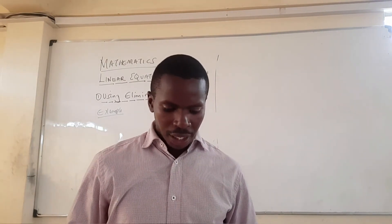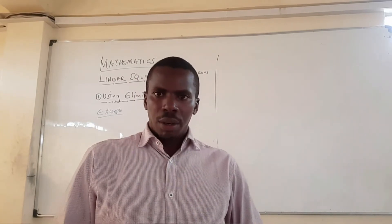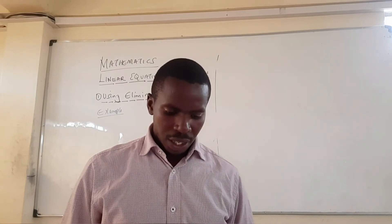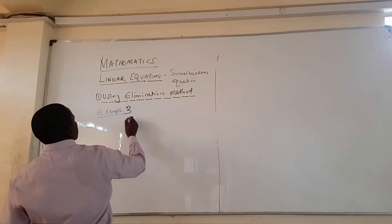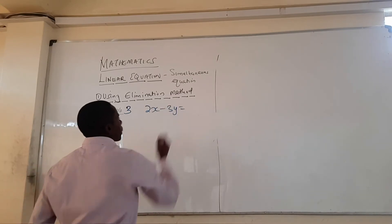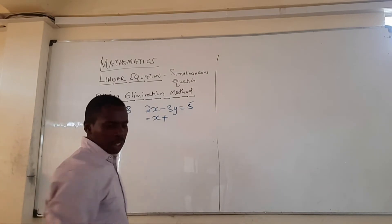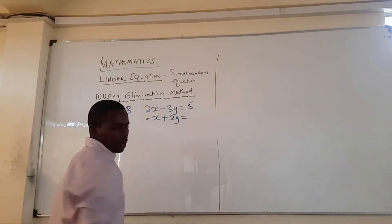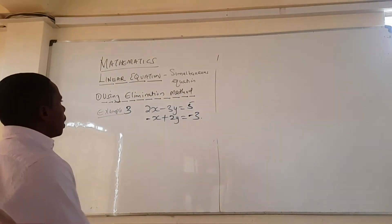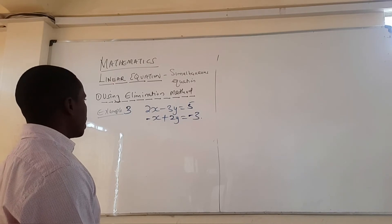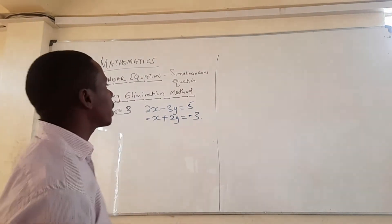Let's have another example so that we can get a clearer picture on how we solve the simultaneous equation. We have 2x minus 3y equals 5, and minus x plus 2y equals minus 3. We need to solve this simultaneous equation using the elimination method. The first thing is to decide what we want to eliminate — is it x or y?